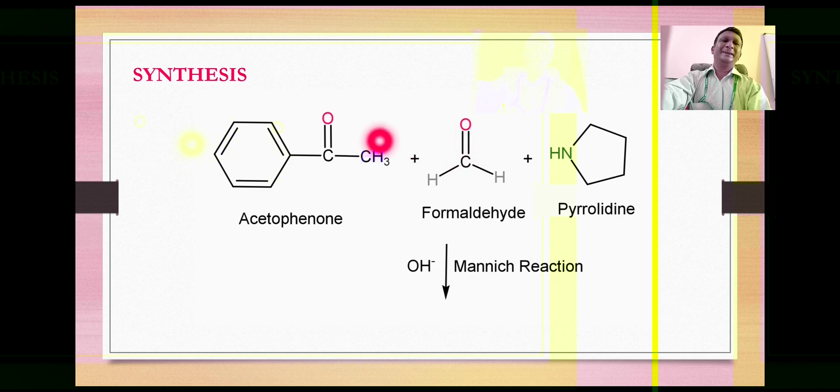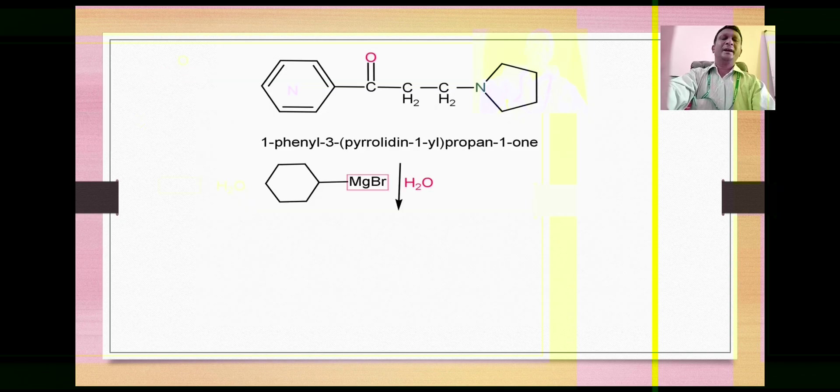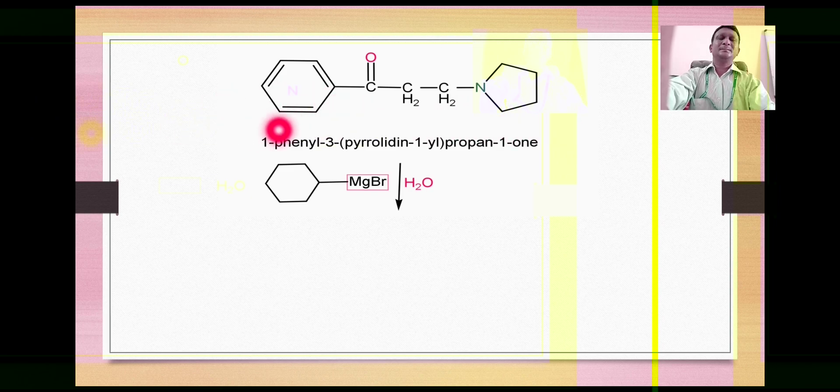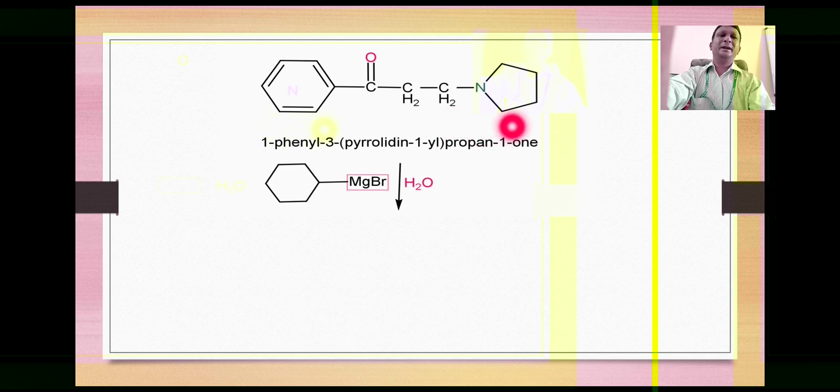This amino group attacks on this carbon. So by this three-component Mannich reaction, the product obtained is this one where this portion comes from acetophenone, the CH2 comes from formaldehyde, and this comes from the secondary amine.